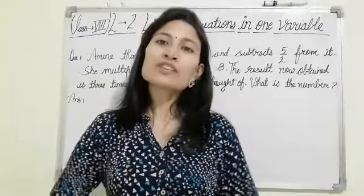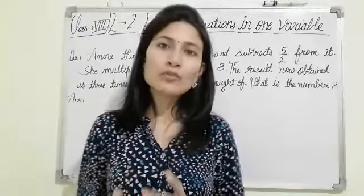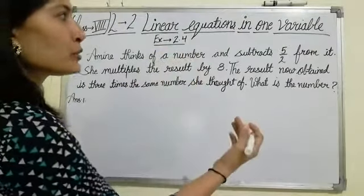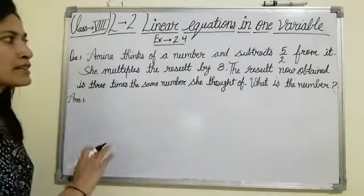Greetings everyone. This is question number 1 of exercise 2.4. Amina thinks of a number and subtracts 5 upon 2 from it. She multiplies the result by 8. The result now obtained is 3 times the same number she thought of. What is the number?